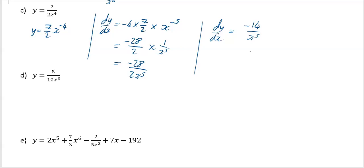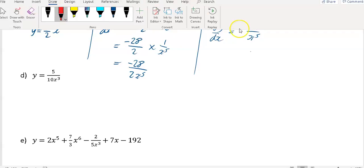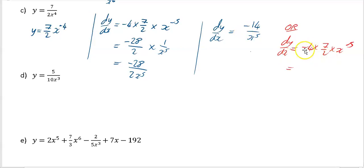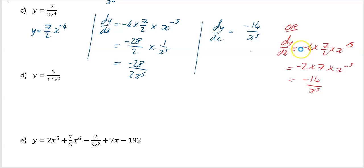We could have done that more simply. From the second line, dy/dx equals minus four times seven over two times x to the minus five. Two goes into minus four twice, so that's minus two times seven times x to the minus five. Minus two times seven is 14, and x to the minus five is one over x to the power of five, so the answer is minus 14 over x to the five. There are different ways to get there — it's the same result.